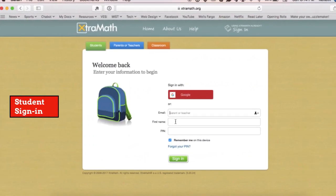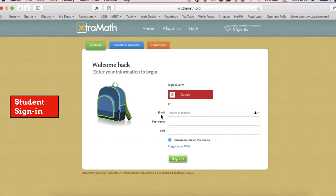Finally, I'm going to show you how students sign in, and this part's a little bit tricky for the first time. Students need three pieces of information: your email address, not theirs, their first name that you entered when you created your roster, and their four-digit pin.